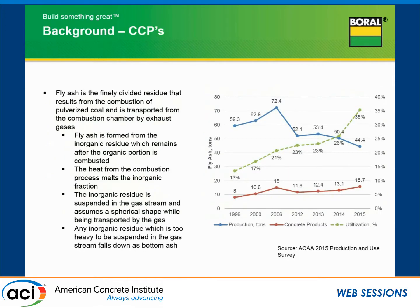Everybody in this room probably knows that fly ash is the finely divided residue that results from the combustion of pulverized coal in electrical generating stations. Fly ash is comprised of inorganic residue — the ash left over from the combustion process. It's spherical in shape because the inorganic fraction has been melted in the combustion process, transported in the flue gases, and assumes a spherical shape. Anything too heavy to remain suspended drops to the bottom as fly ash.